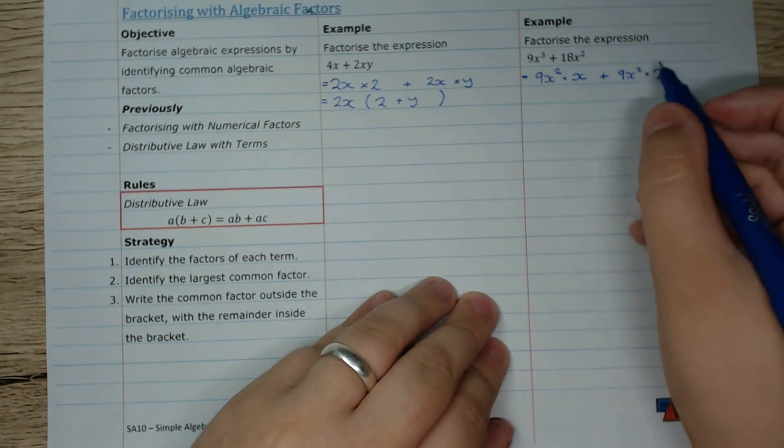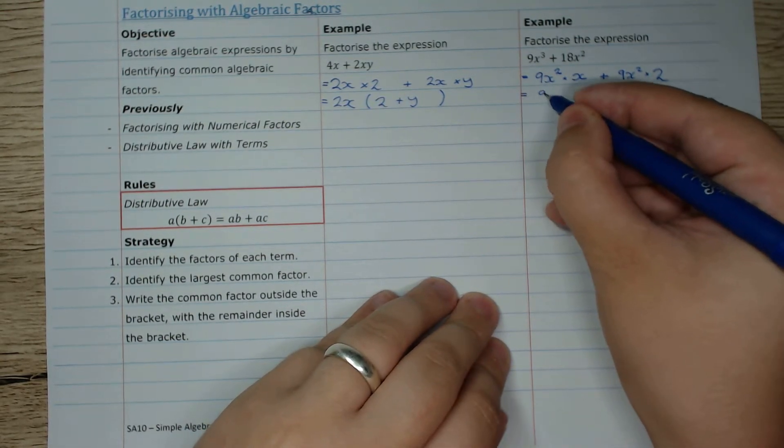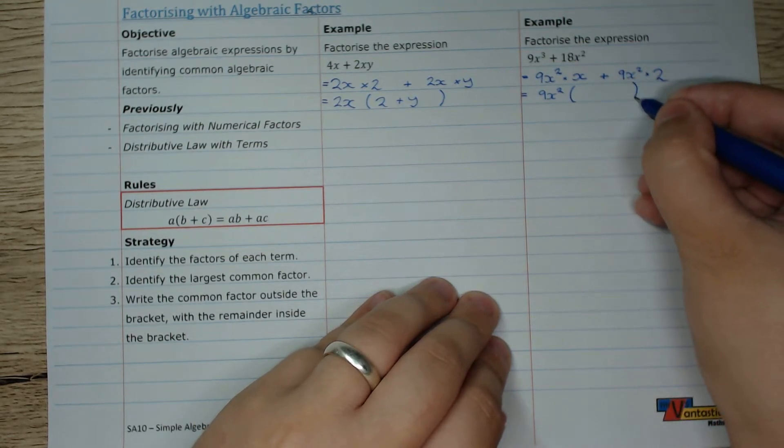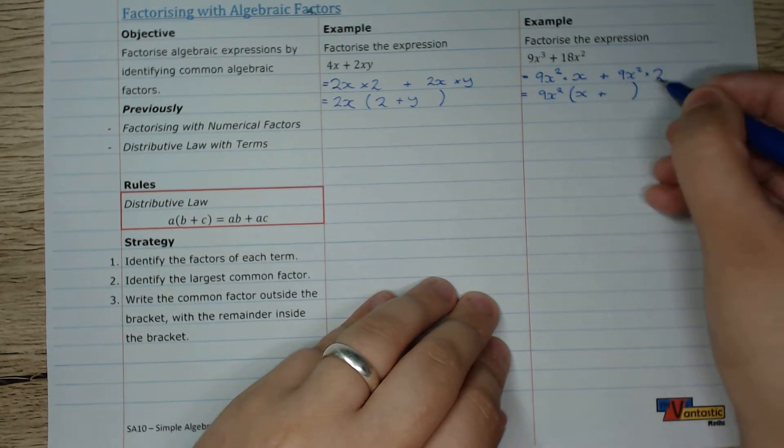I've got a common factor of 9x squared. So 9x squared comes out the front. And inside of brackets we have x plus 2.